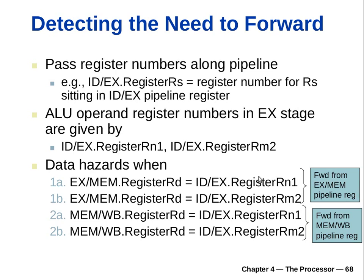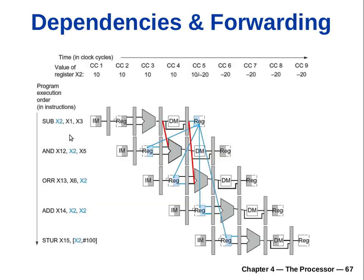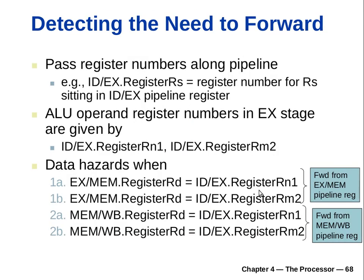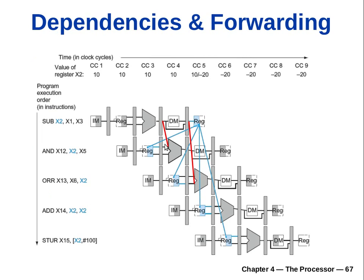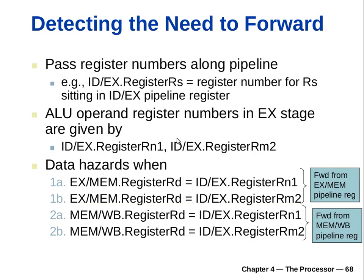The register RD is X2, and the condition checks: Execute MEM pipeline register output is X2, and the next instruction also uses X2 as input. So you can only forward if you are writing to the register. The focus here is implementing forwarding at the execution stage — this is the most common case. These are the conditions to determine if there is a data hazard, and the action is to forward.